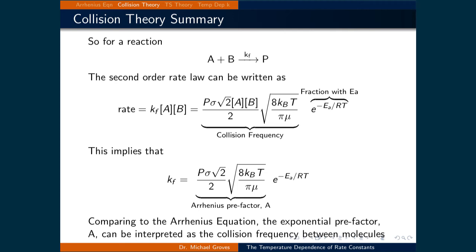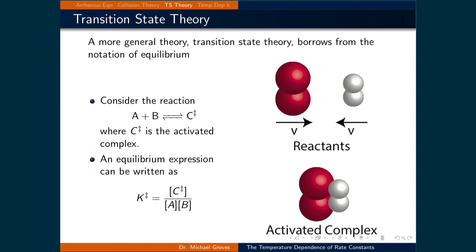Let's now move on to the second theory which tries to describe reaction processes. Transition state theory is a more general theory which borrows from the notation of equilibrium. Consider the reaction where A plus B is in equilibrium with C double dagger, where C double dagger is an activated complex — think of it as the moment that A and B are fused together and could react either way, returning to the reactants A and B or forming the products. We can write an equilibrium expression for this reaction as K double dagger equal to the concentration of C double dagger over the concentration of A times the concentration of B.